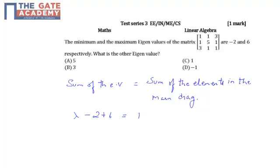This should be equal to 1 plus 5 plus 1, so we have lambda plus 4, and this part is equal to 7.